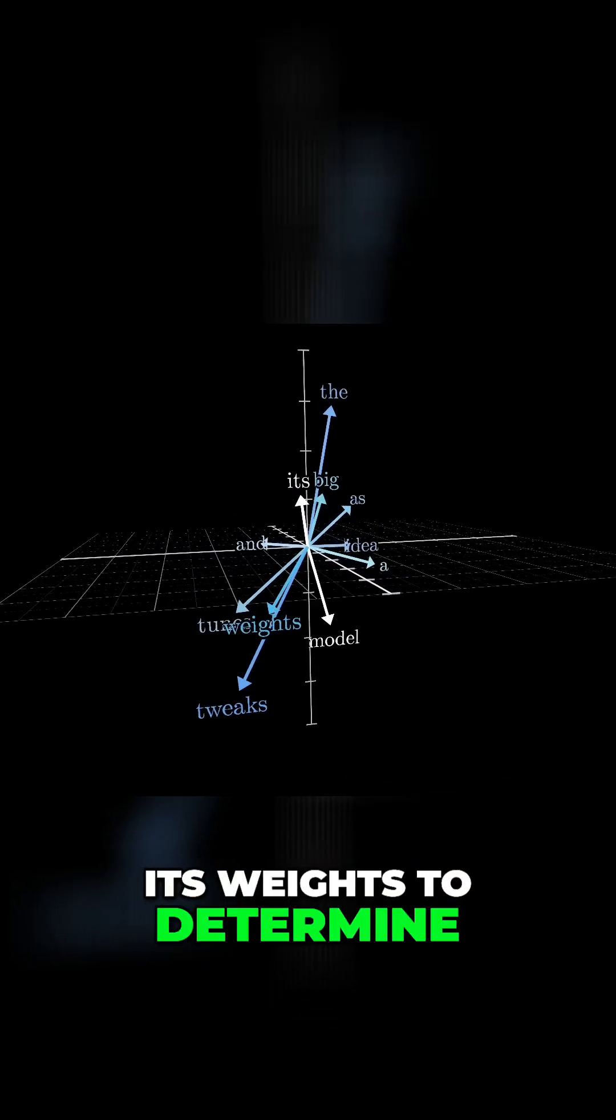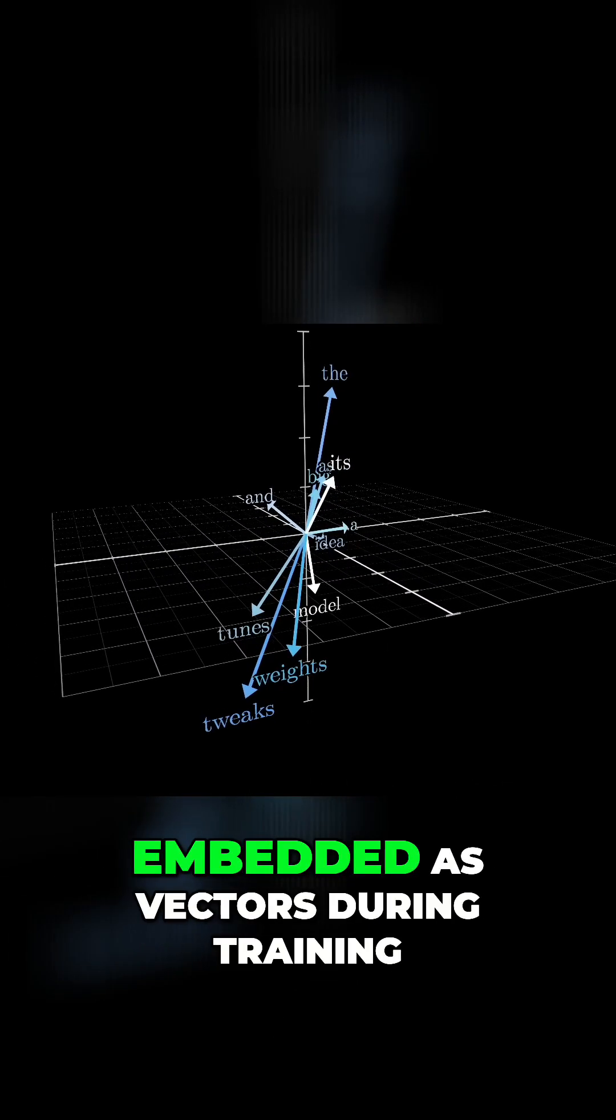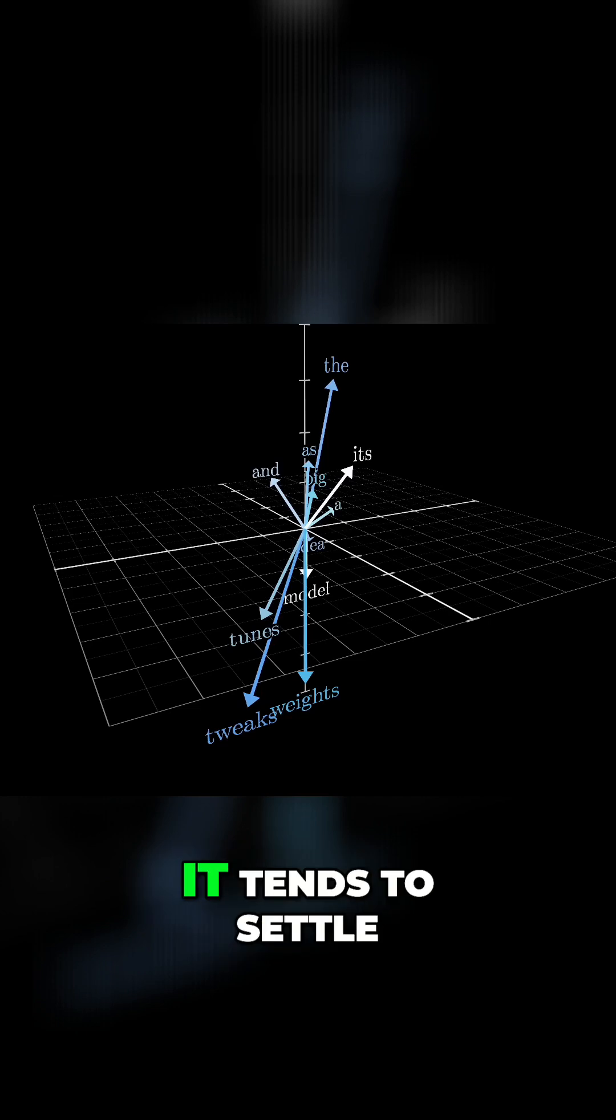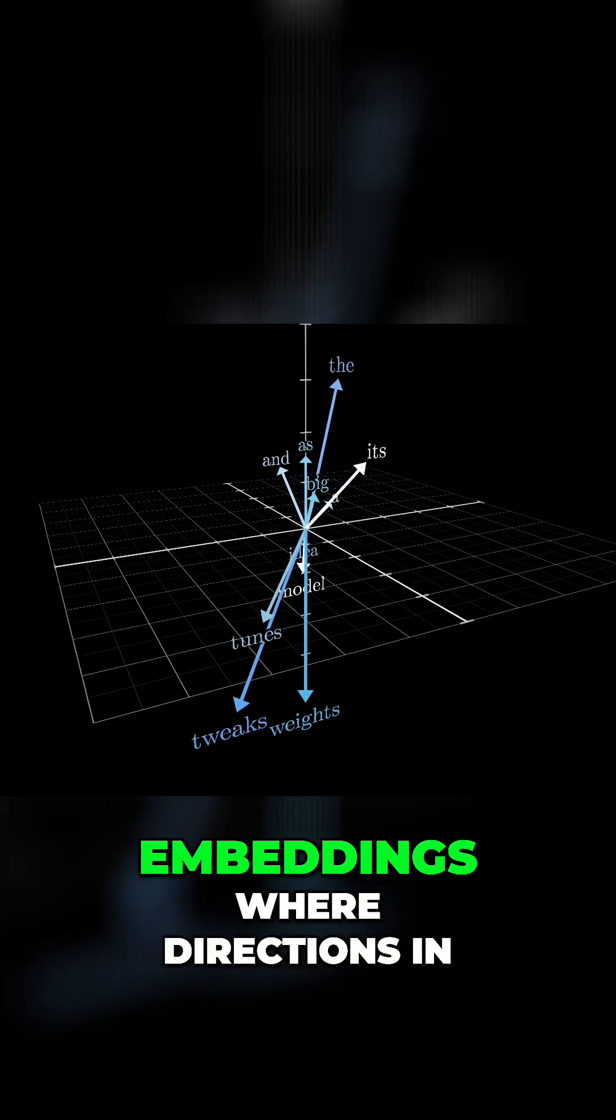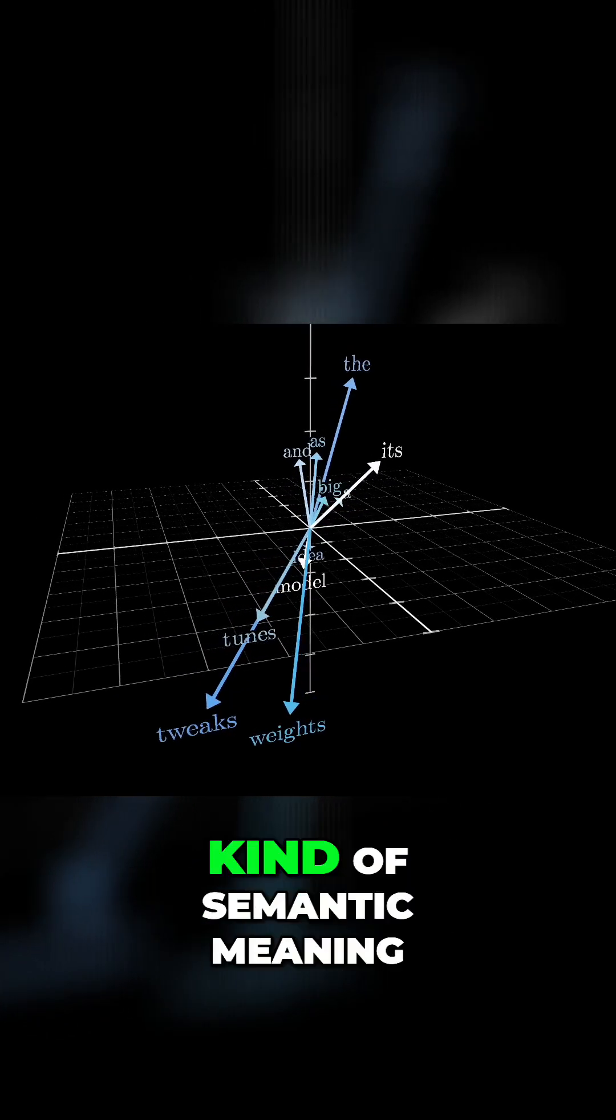The big idea here is that as a model tweaks and tunes its weights to determine how exactly words get embedded as vectors during training, it tends to settle on a set of embeddings where directions in the space have a kind of semantic meaning.